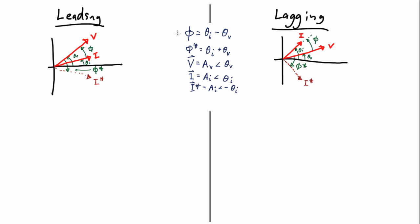Phi here represents the relative angle difference between the voltage and the current vectors. The phi asterisk represents the angle difference between the original voltage vector and the conjugate of the current vector.